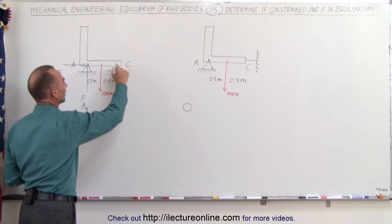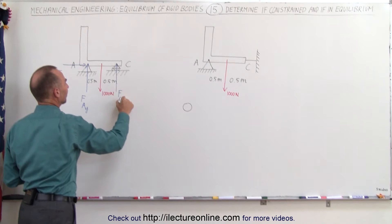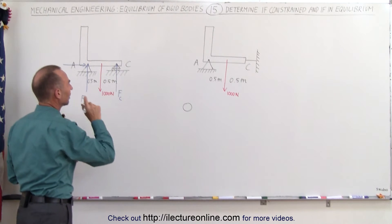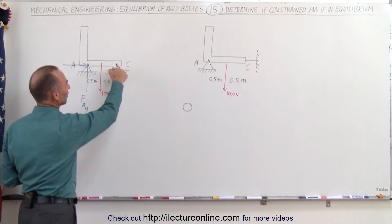Over here we can have a force only in the vertical direction, so we have a force at C in the vertical direction. We can't have a force in this direction because it's on rollers.